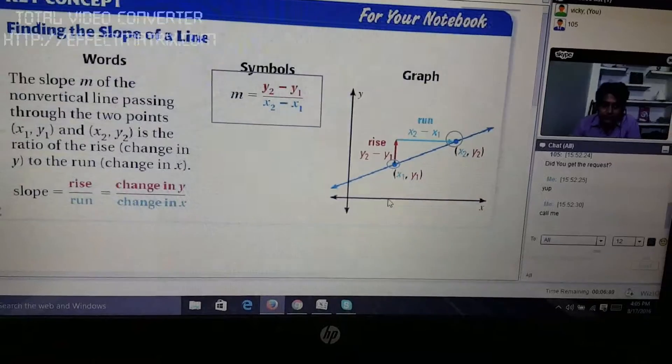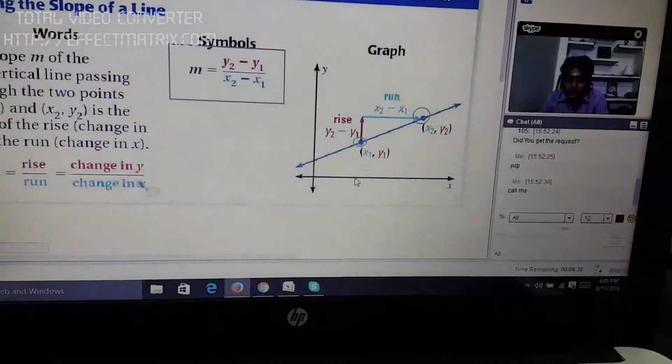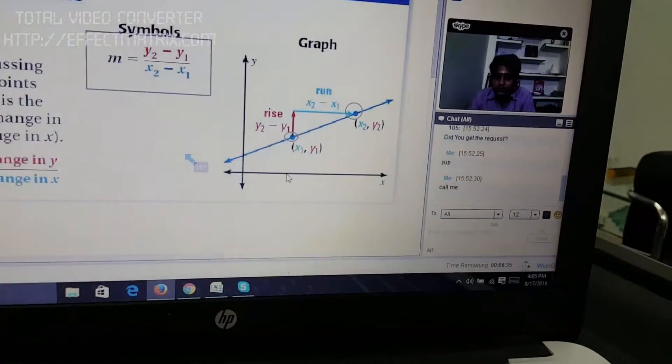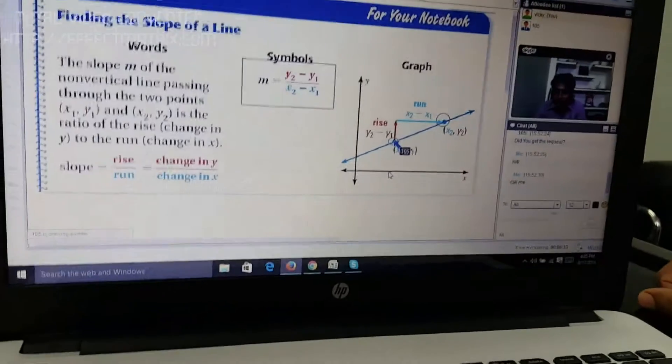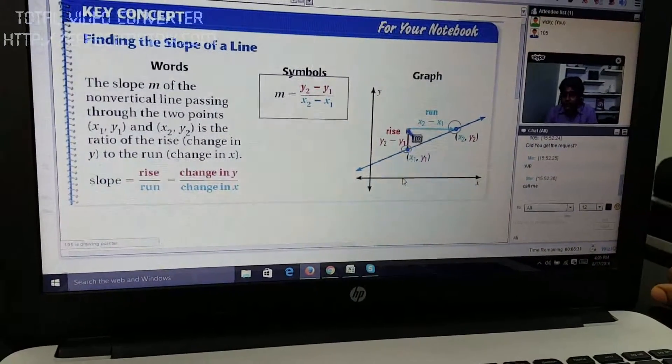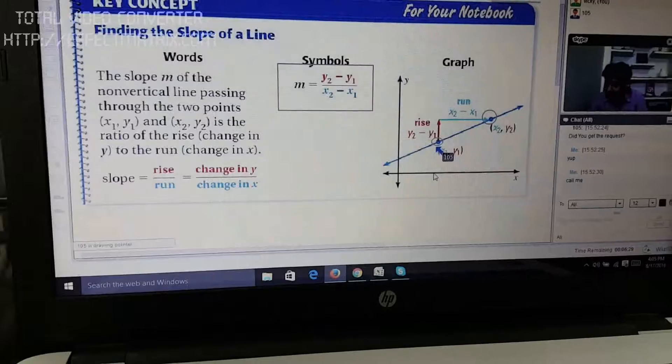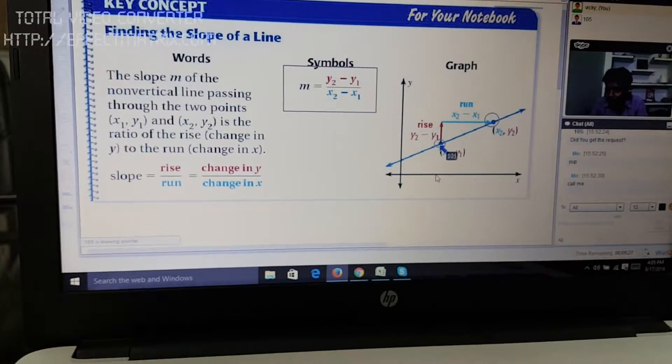Basically, if you talk about this formula, this formula is nothing but rise over run. Rise over run simply means, if you talk about rise, rise is the difference in the vertical shift. If we talk about vertical shift, initially that point was y1.